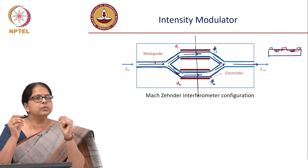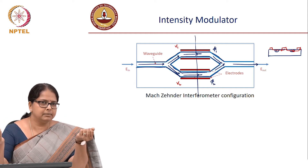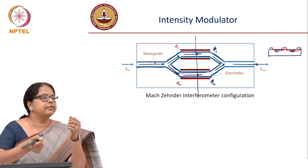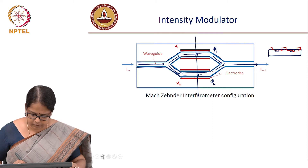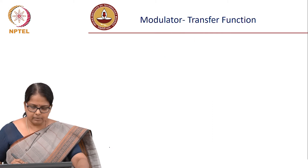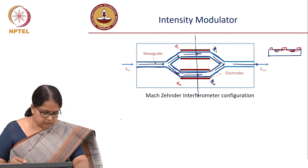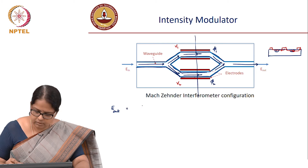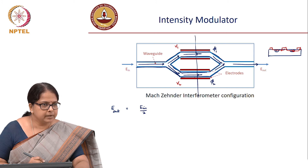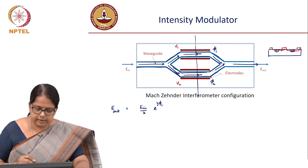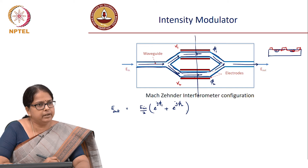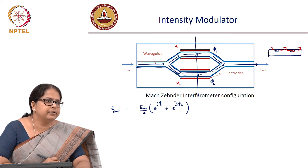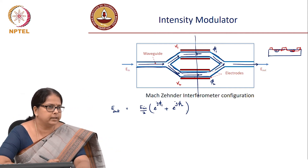We will now work out the transfer function of this modulator. E_out equals E_in divided by 2, since the light got split. In the first arm there is a phase factor e^{j phi_1}, and in the second arm e^{j phi_2}. We are looking only at the phase introduced by the voltages, and assuming all residual phase differences are zero. Now let us simplify by taking out a common phase factor e^{j(phi_1 + phi_2)/2}.